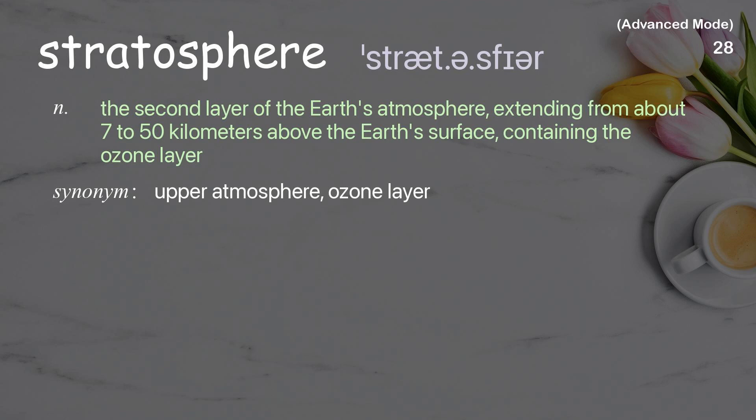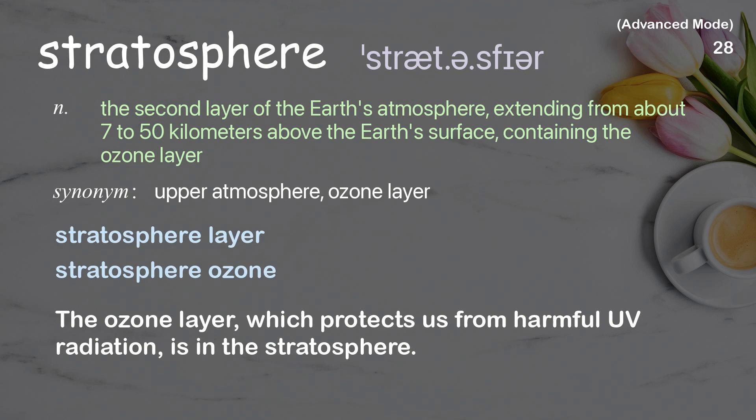Stratosphere. The second layer of the Earth's atmosphere, extending from about 7 to 50 kilometers above the Earth's surface, containing the ozone layer. The ozone layer, which protects us from harmful UV radiation, is in the stratosphere.